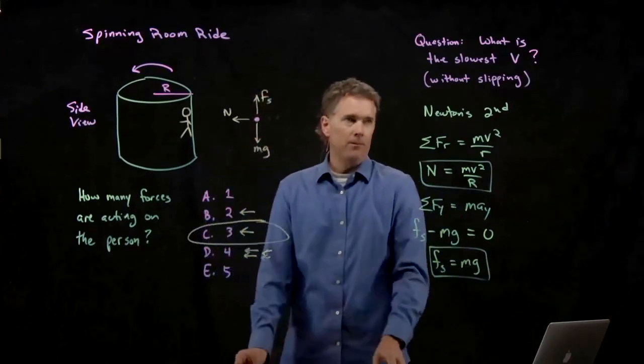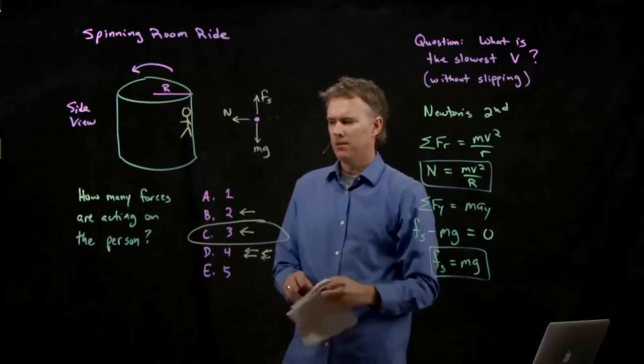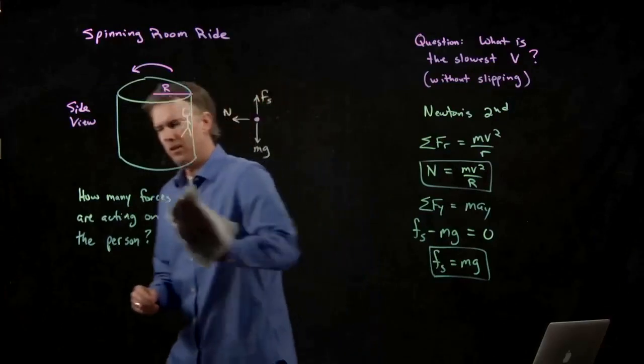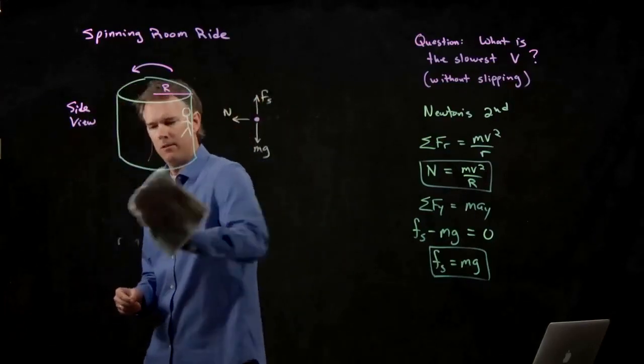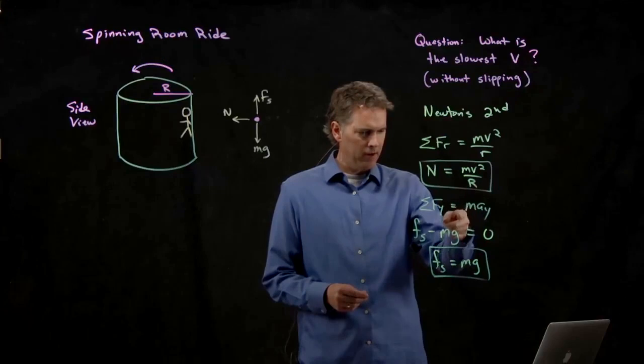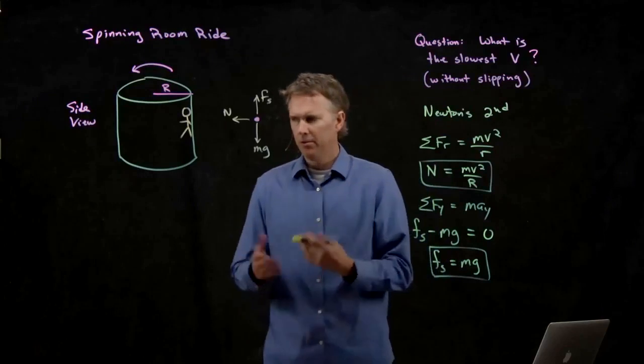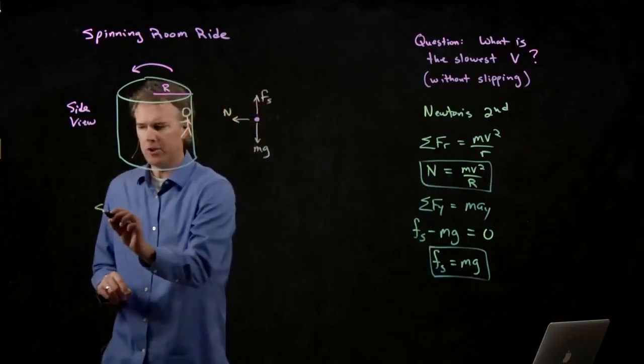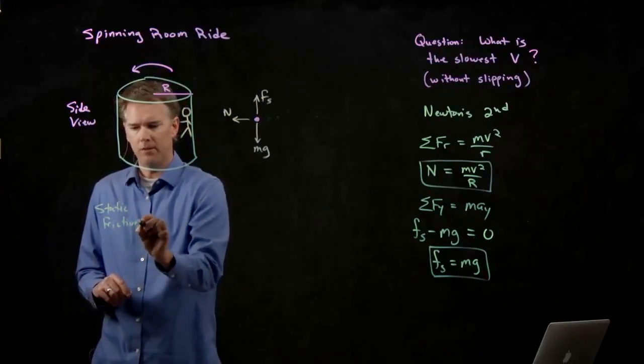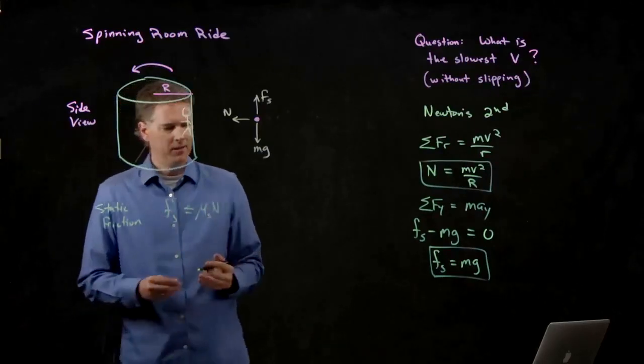So if we want to figure out the slowest velocity that you can go, the slowest speed of rotation, how do we do this? It doesn't look like we have quite enough information yet. Because we have the normal force here. We've got frictional force there. But we have to relate the two. And we sort of know what the answer is, right? Static friction is the following. F sub S is less than or equal to mu S times the normal force.